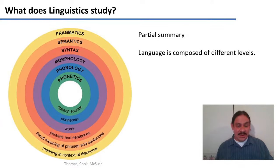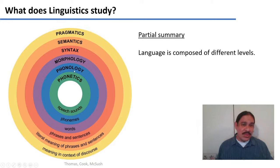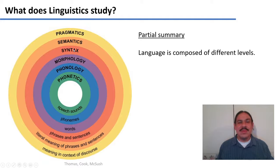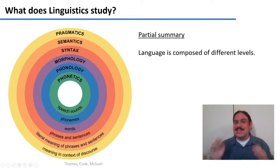Language is composed of different levels — phonetics, phonology, morphology, and so forth — all of which can interact. The pieces of phonetics make up phonology, the pieces of phonology make up the morphemes, morphemes make up words, which then go on to make up sentences, which have meaning and then meaning in context. So you can see how each of them is contained in the other.